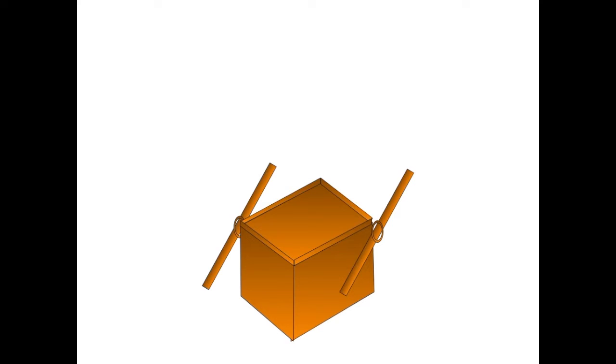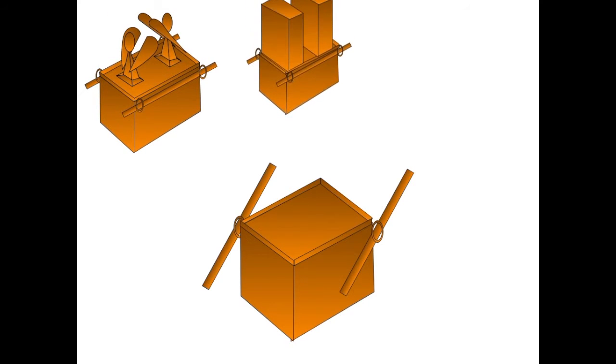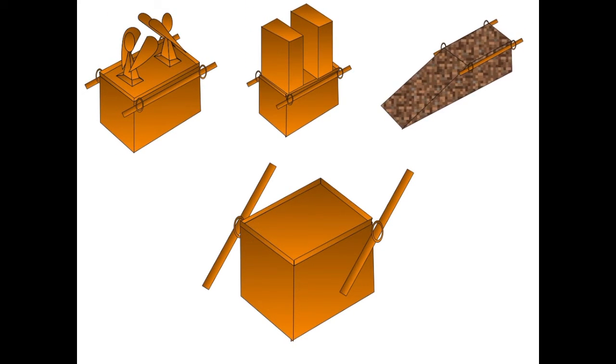The Shari Aron has a different question. The poles for the Mizbeach HaZahav were placed on the corners. The Aron, the Shulchan, and the Mizbeach all had their Badim on the sides. Why was the Mizbeach HaZahav different?